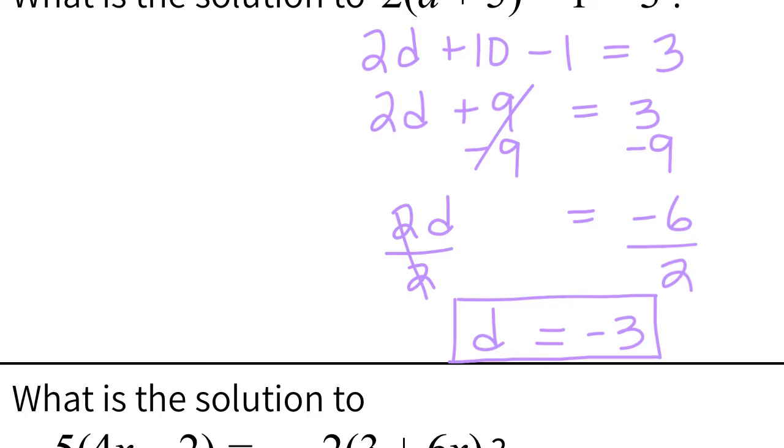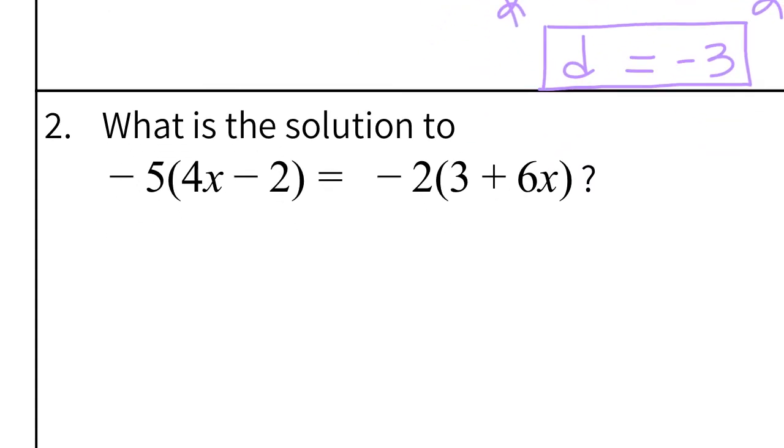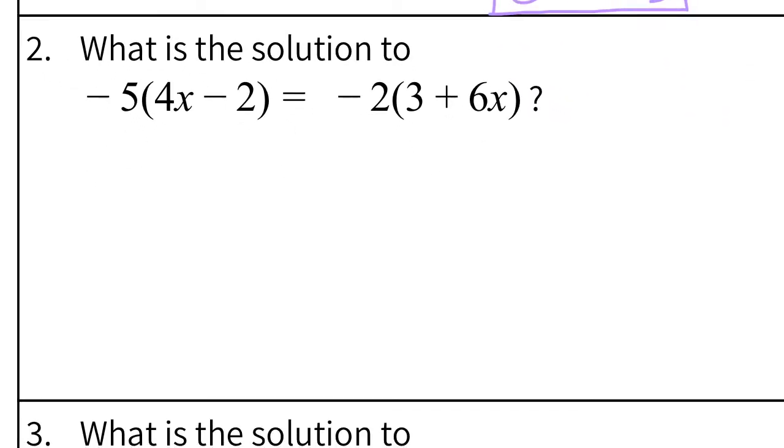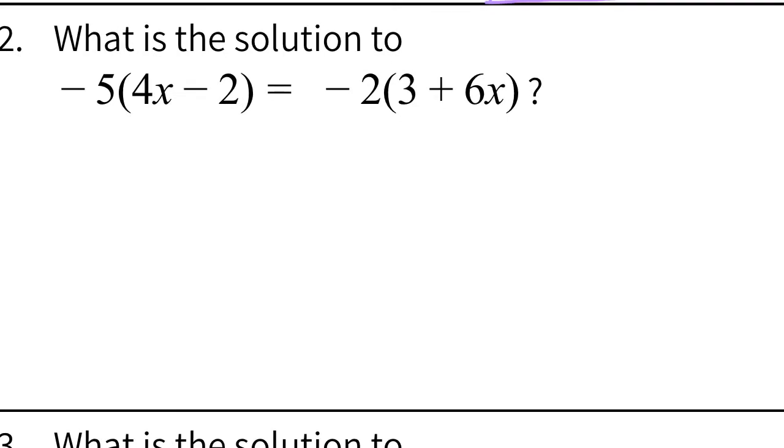Let's do another example. So what is the solution to, and then there's our equation. So always, always our first step is to distribute. So starting with negative 5 times 4x that gives me negative 20x. Negative 5 times negative 2. So be careful. A negative times a negative is a positive. So plus 10 equals.